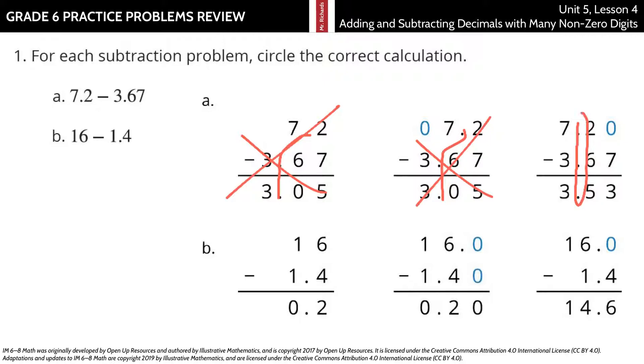In our last one, we do have the decimal points lined up, and we used the 0 here as the placeholder, which is great. They did some unbundling that you can't really see, but they do get the correct solution, so the third one is correct.